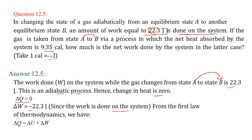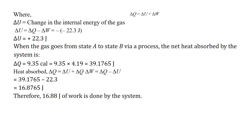From the first law of thermodynamics, delta Q equals delta U plus delta W. We want delta U, so rearranging: delta U equals delta Q minus delta W. Delta Q is 0 and delta W is minus 22.3, so delta U becomes plus 22.3 joules. When the gas changes state from A to B via the second process, the net heat absorbed by the system is 9.35 calorie.